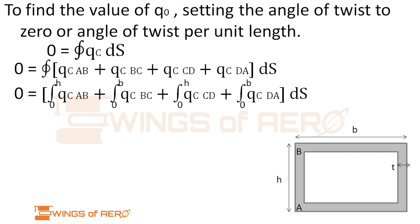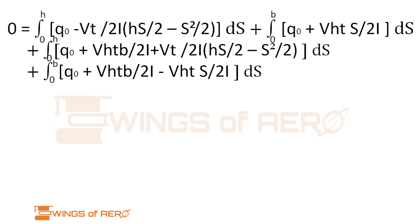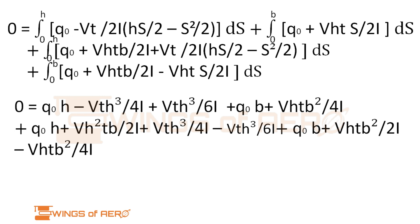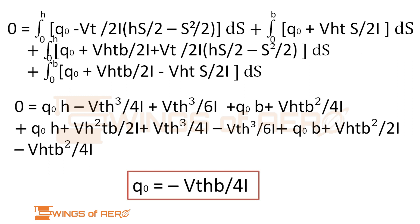Applying values from equations 6, 7, 8, and 9 over the respective limits — AB from 0 to h, BC from 0 to B, CD from 0 to h, DA from 0 to B — and integrating, then simplifying and cancelling common terms, we get q0 = −VtHB/(4I).